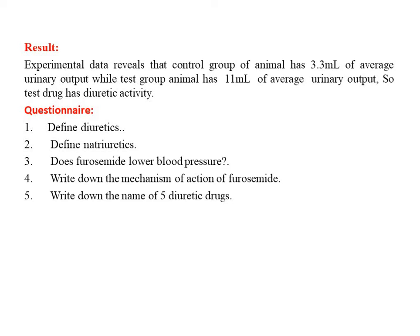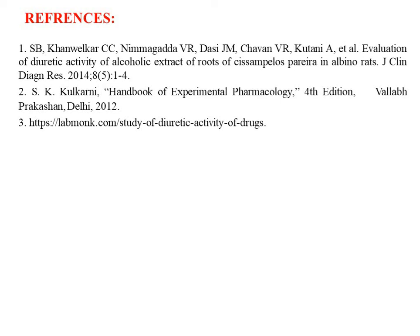For the questionnaire: what are natriuretics? Natriuretics are diuretics mainly responsible for excreting sodium ions only along with water. General diuretics increase urinary output along with various ions such as magnesium, calcium, sodium, and chloride. Also: does furosemide lower blood pressure? Write down the mechanism of action of furosemide, and write down the names of five diuretics. These are the questions to answer. Thank you very much.